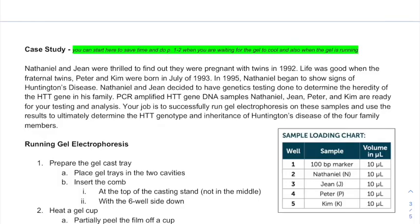In this lab, we are going to look at and identify the inheritance of Huntington's disease through the HTT gene in four individuals. In the case study, we have four people. Nathaniel and Gene are going to be the parents of two children, Peter and Kim. Nathaniel, the father, ends up having the onset of Huntington's about a year after Peter and Kim are born. He's 33 years old at that time, and he's got twins — Peter and Kim.